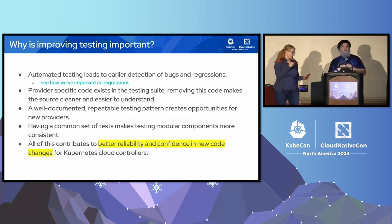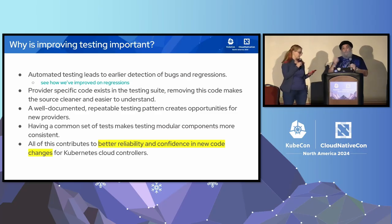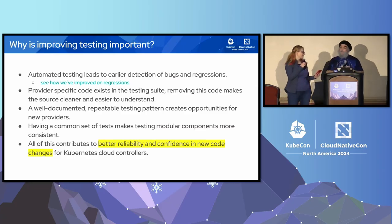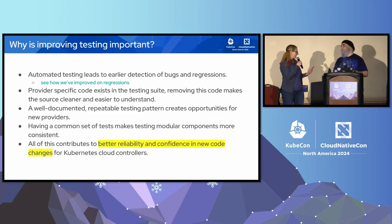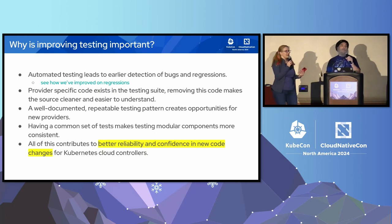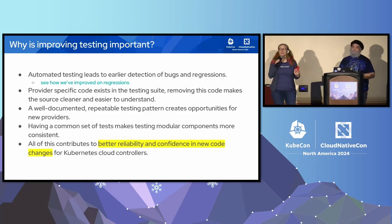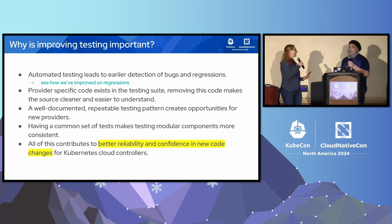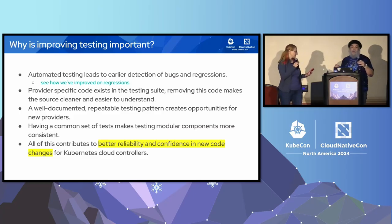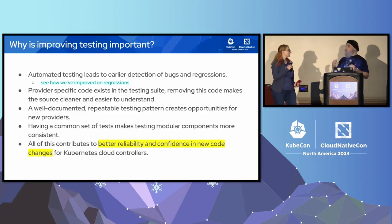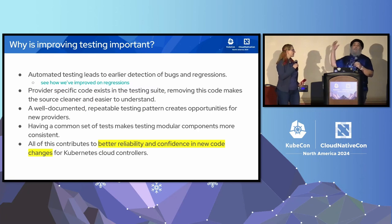Why is improving testing important? Automated testing leads to earlier detection of bugs and regressions. Even if we all believe testing is important, committing to doing it is a very different thing. Currently the cloud provider testing we're doing is limited in several ways. Documenting things and making repeatable patterns contributes to better reliability and confidence for these new components that have been taken out of the tree.